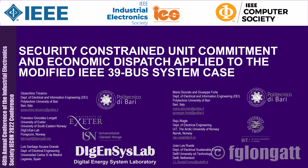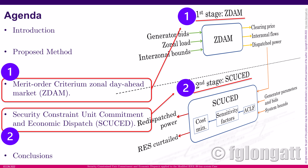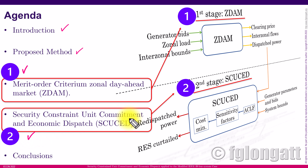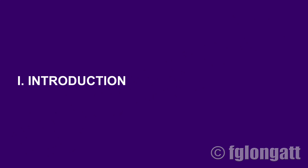I will now present the short agenda. Today we have basically five sections. I will start with a brief introduction about economic dispatch and unit commitment. Then I will introduce the proposed method, which has two different stages: the first stage is a merit order criterion for the zonal day-ahead market, which we call ZDAM, and the second is the Security Constrained Unit Commitment and Economic Dispatch, known as SCUCED. Finally, we will conclude with some conclusions and remarks.